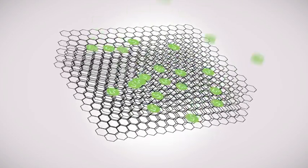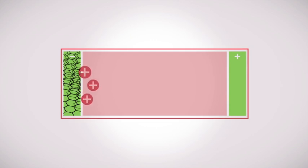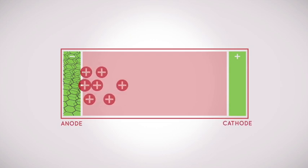Graphene has a high surface area to mass ratio, and it means more space in which to store energy without increasing the total mass of a battery.